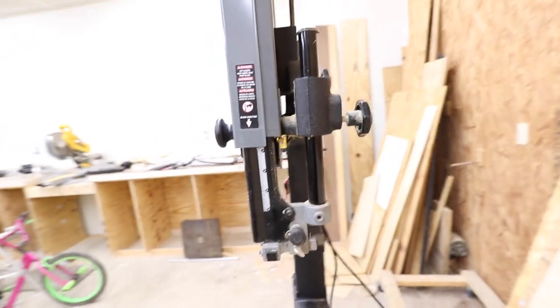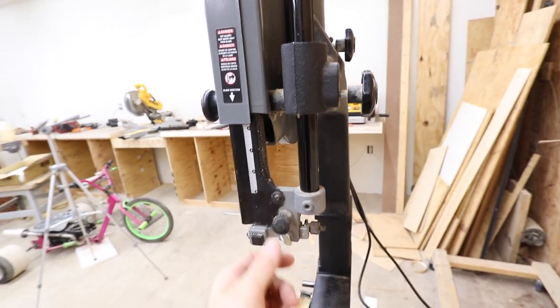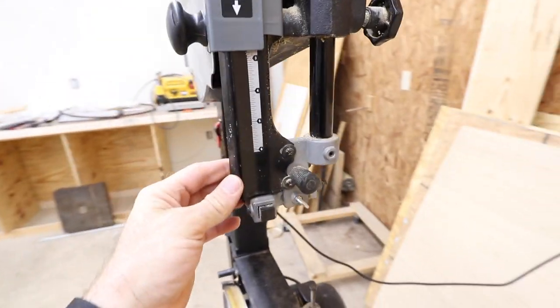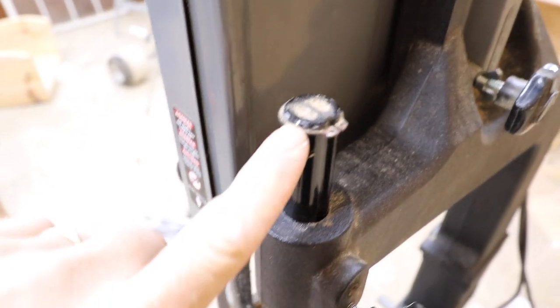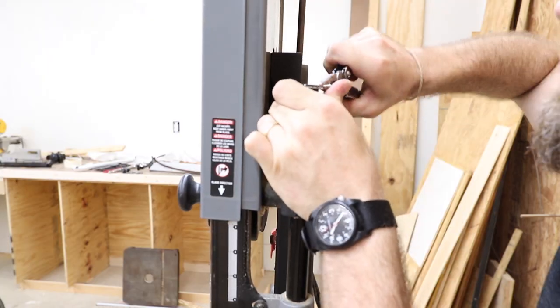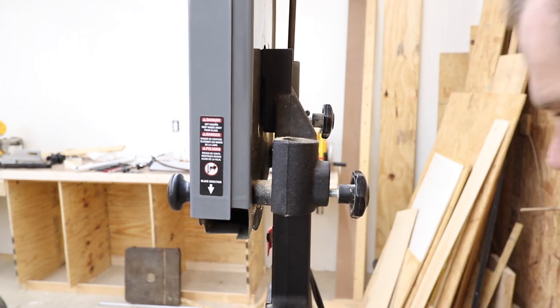All right, so now we're going to move to this section of the saw. We're going to remove the upper blade guard and install that new post, and that should be pretty easy. First thing we're going to do is remove this little snap ring, and I think everything will just slide right out.